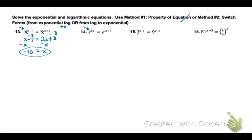Number 14, I notice my bases are the same again. So that means I can ignore those and set my exponents equal to each other. I'll subtract 3x from both sides. 2x equals 4. Divide by 2. x equals 2.